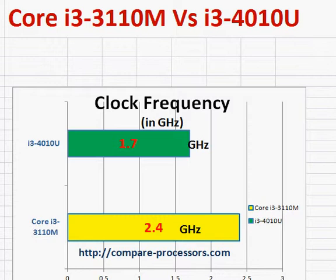In terms of IC-3110M versus IC-4010U, the IC-3110M belongs to the earlier Ivy Bridge series while the IC-4010U is the newer Haswell processor.